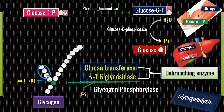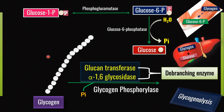The terminal 3 glucose residues are again removed by glucan transferase and transferred to the growing chain end via α-1,4 to α-1,4 linkage. The other activity of the de-branching enzyme, α-1,6 glycosidase, then breaks the α-1,6 glycosidic bond and releases free glucose. Now we have a straight chain with only α-1,4 linkages, which is acted on by glycogen phosphorylase and inorganic phosphate. One glucose is released at a time as glucose-1-phosphate, then glucose-6-phosphate in muscle, or free glucose in the liver.